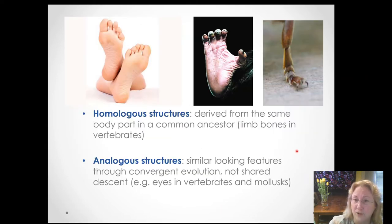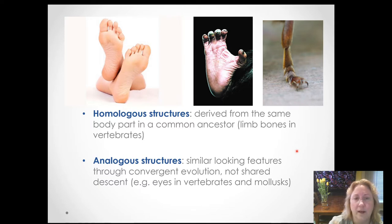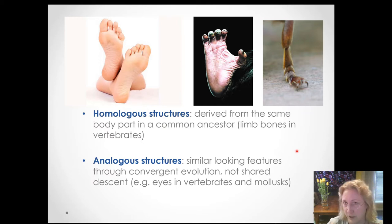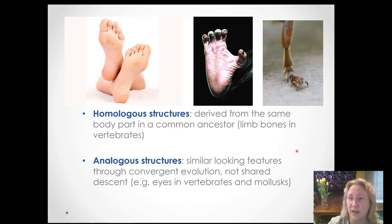If we're going to talk about structures that are the same in different organisms, we want to differentiate between structures that are homologous — the same because an ancestor also had that structure — and structures that look similar but evolved independently, which we call analogous. They look similar because of similar selective pressure, and we call that convergent evolution: things converging on the same solution to a problem, not because of shared ancestry.